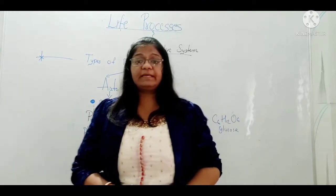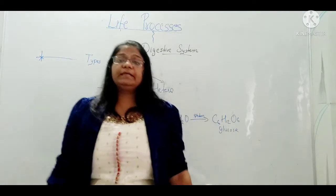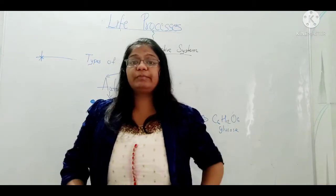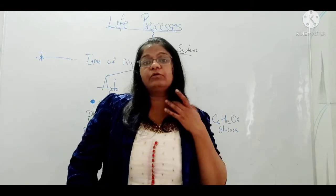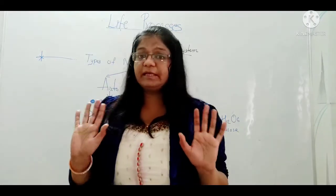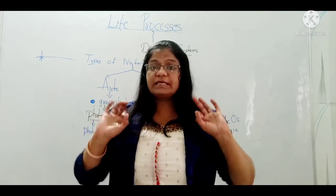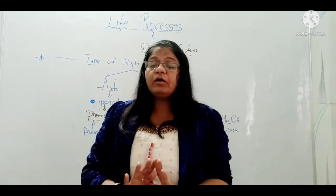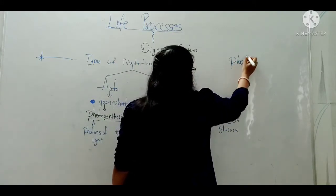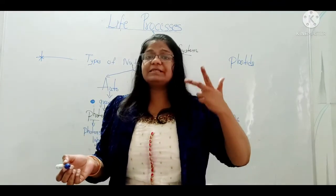So photosynthesis is a process in which photons of light are used to make a specific product. Green plants use carbon dioxide plus water molecules and form C6H12O6 — glucose molecule — in the presence of photons of sunlight. This process is called photosynthesis. The raw materials of photosynthesis are: carbon dioxide, water molecules, sunlight, and the special organ present in the plant body — chloroplast. In plant bodies we have plastids of three kinds: chloroplast, chromoplast, and leucoplast.